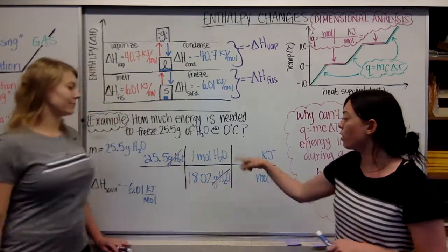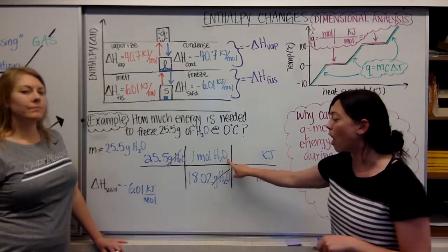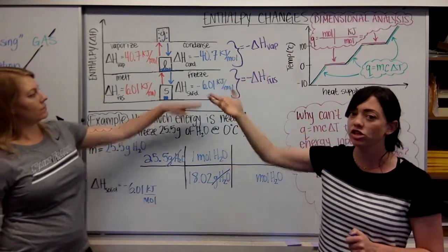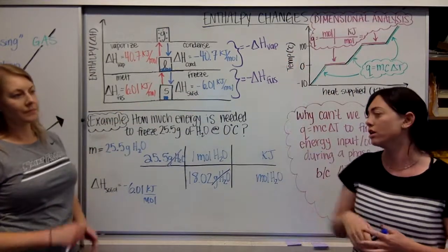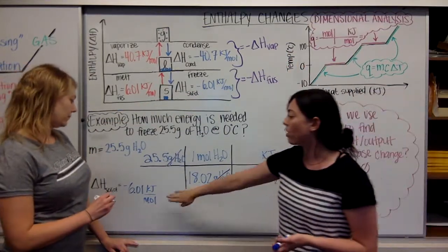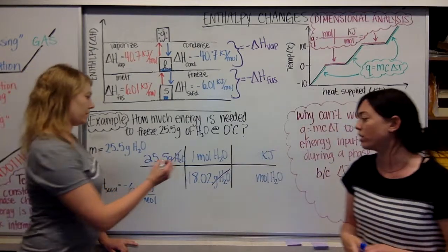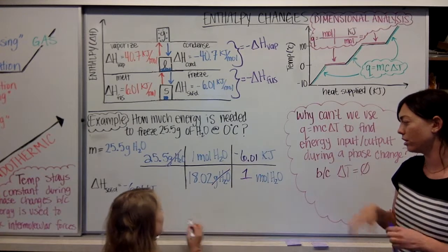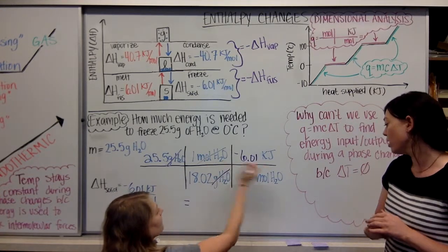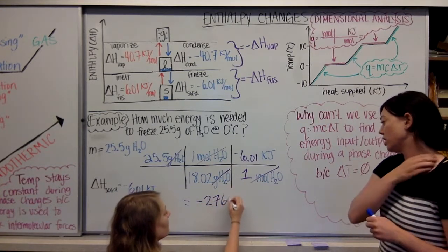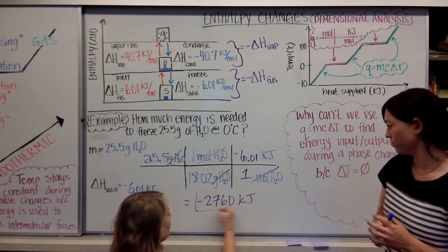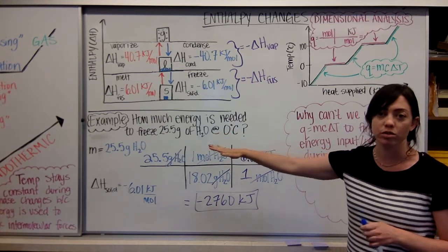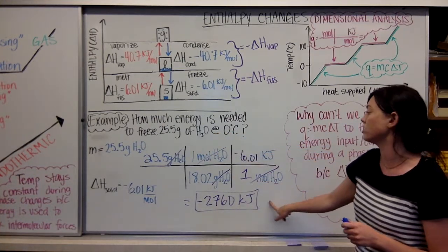When we have our water in moles, we can use our information about heat of fusion and heat of vaporization to figure out how much energy needs to release. For this, the heat of solidification is negative 6.01 kilojoules for every one mole, which equals negative 2760 kilojoules — wait, negative 8.49 kilojoules. This is how much energy a 25.5 gram sample of water needs to release in order to freeze into ice.